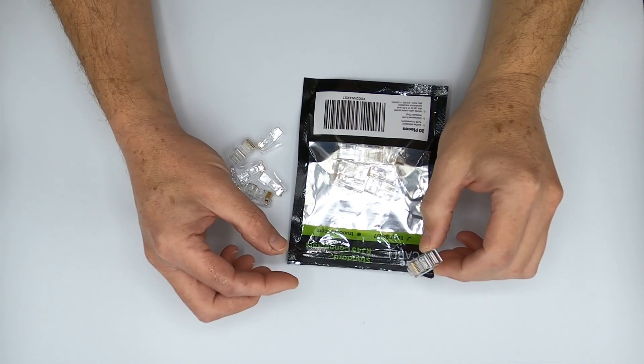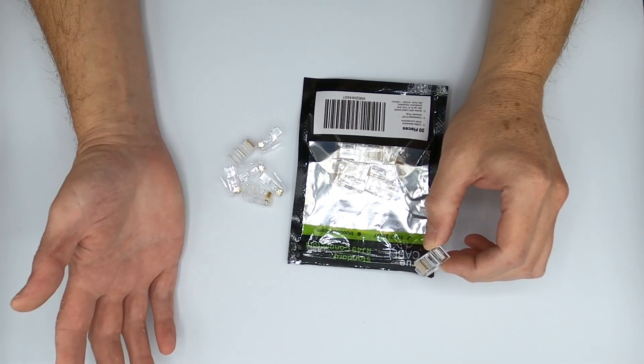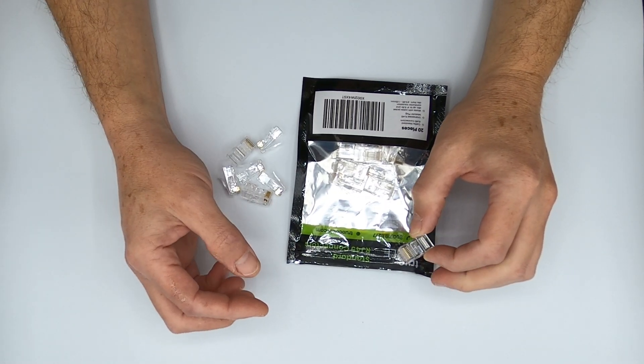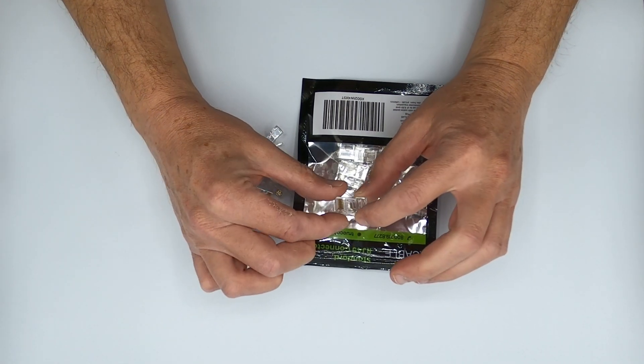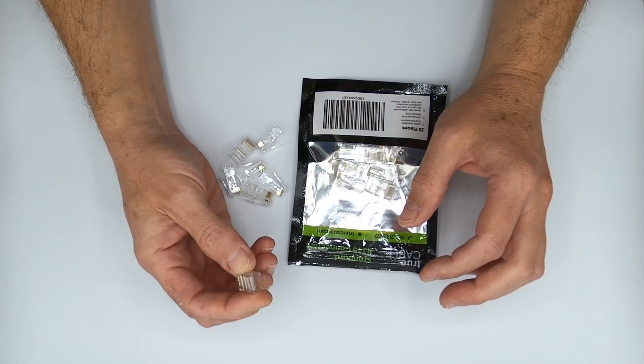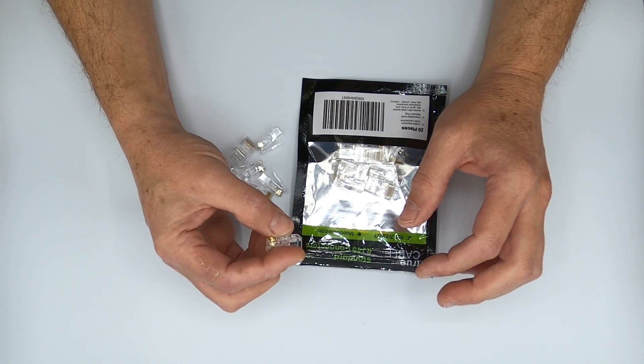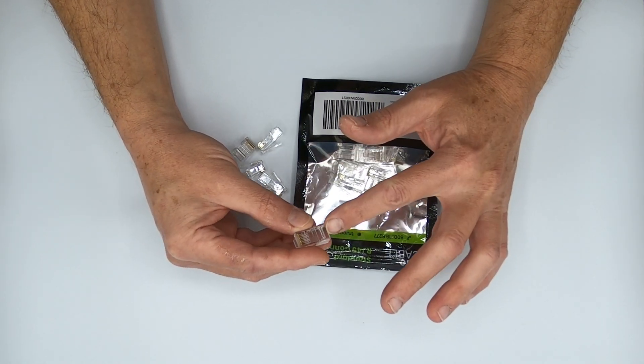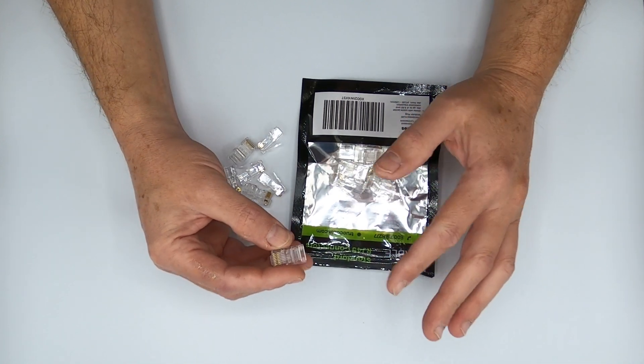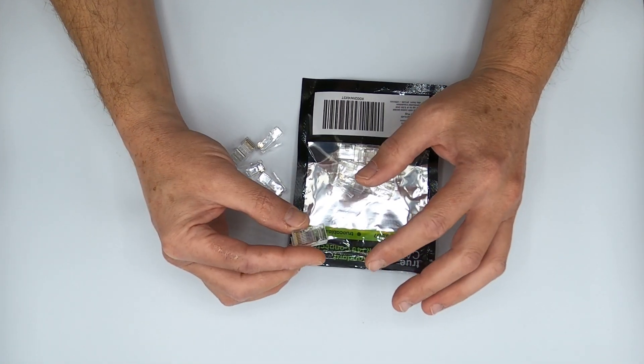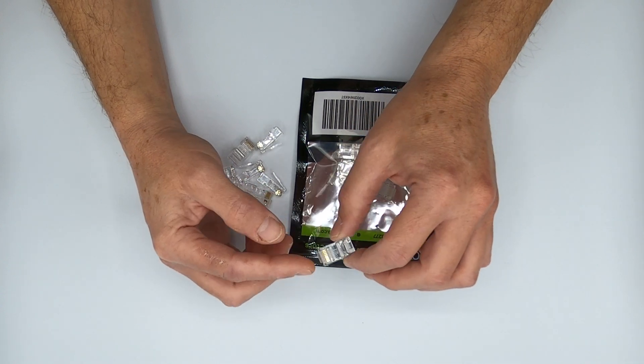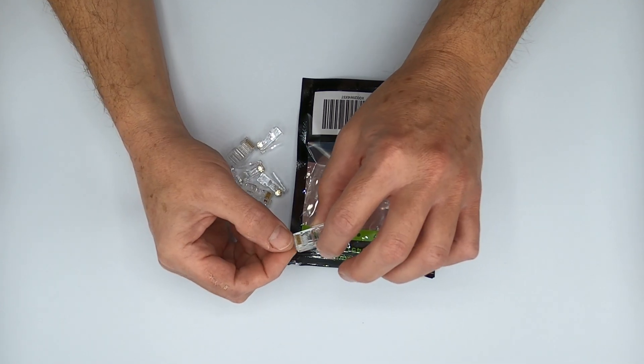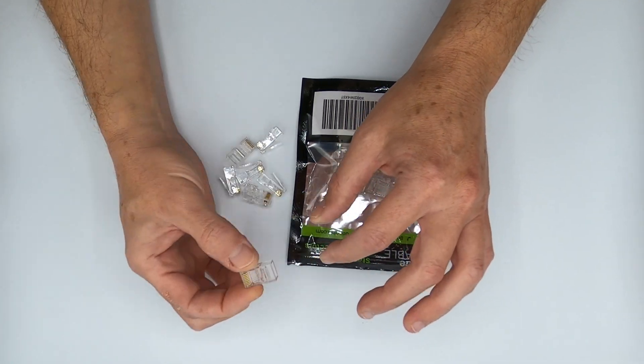Hey there YouTubers, it is Don coming back to you again with another how-to video. This time we're going to be talking about the TruCable standard RJ45 unshielded connector, this particular one being for category 5e cable.